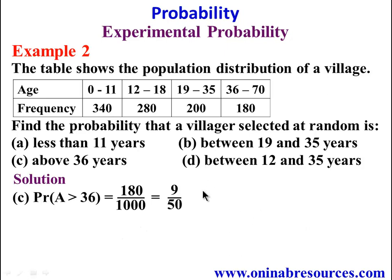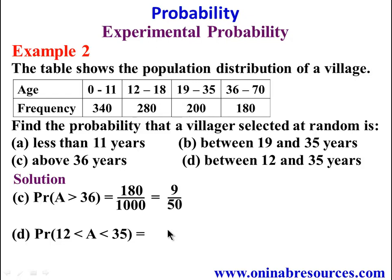Then we go to part D. For D, we have to find the probability that a villager selected at random is between 12 and 35 years of age. The probability is going to be the sum of the frequencies over the total population. 280 plus 200 gives 480 over 1000. Cancelling zeros, 48 over 100 in the simplest form gives 12 over 25. And that is the end of the solution to example 2.